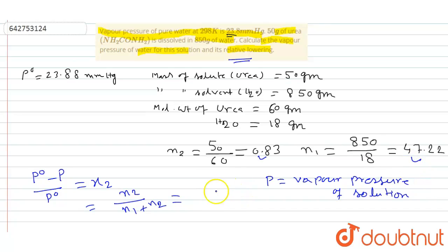equal to 47.22. So 0.83 by 47.22 plus 0.83, that equal to 0.0173. So relative lowering that is 0.0173.